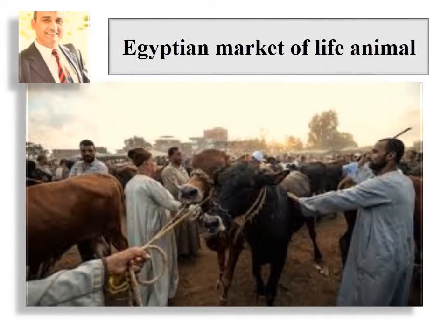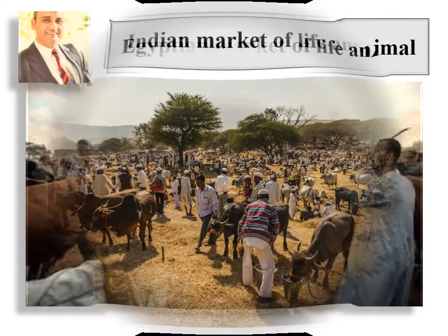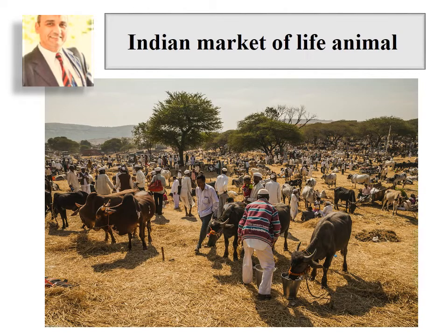This picture clarifies the classic shape of an Egyptian animal market, where contact occurs between different animal species coming from different areas. Diseased and sound animals come in contact, and humans and animals can infect each other. These markets are dangerous places for disease transmission and distribution, similar to Indian markets where animals from different areas come in contact.